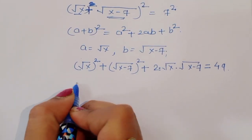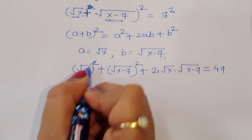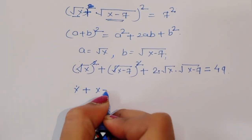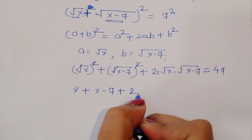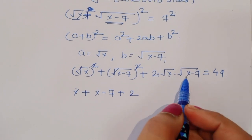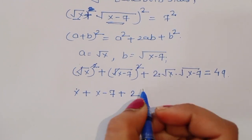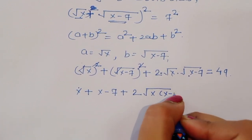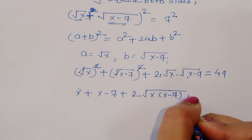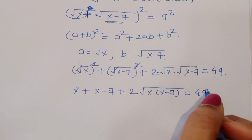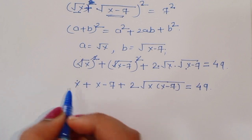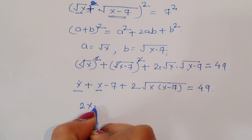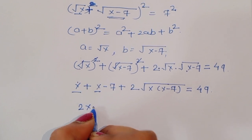Now we can write this: x plus x minus 7 plus 2 times square root of x times square root of x minus 7 is equal to 49.